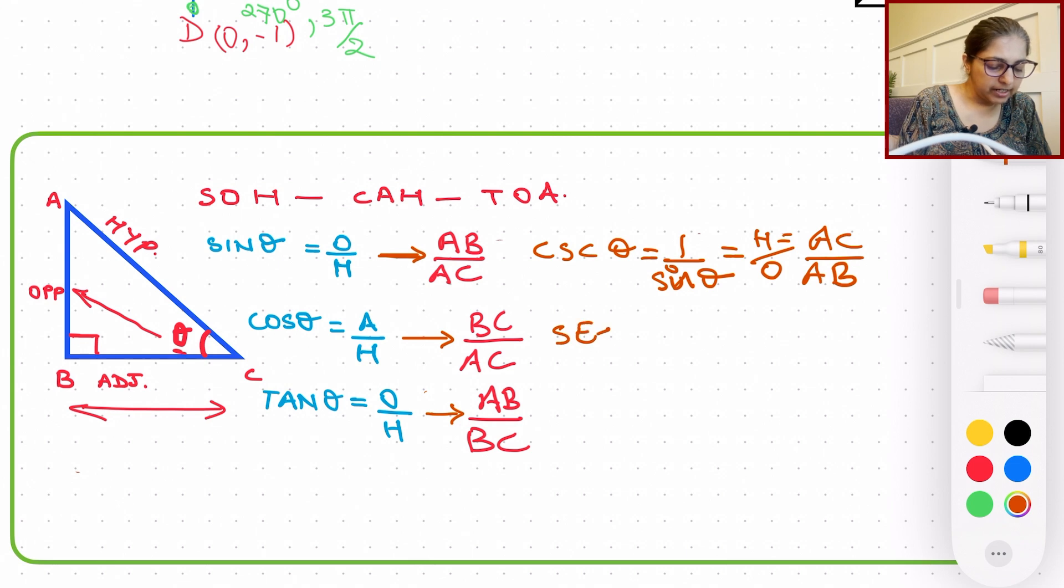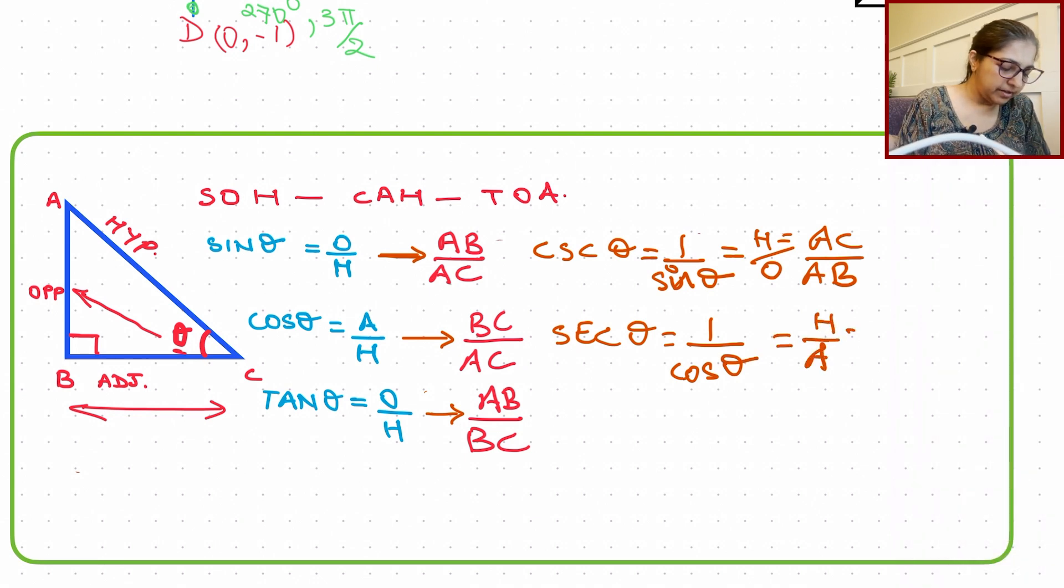Similarly, secant is the reciprocal of cosine, which is again hypotenuse over the adjacent. And from the triangle that we have, it is going to be AC being the hypotenuse, and the adjacent side length being BC.